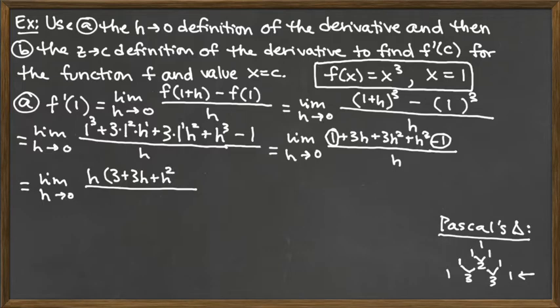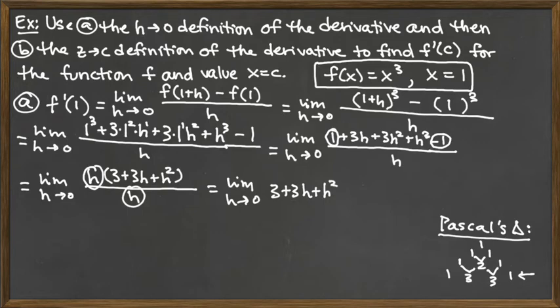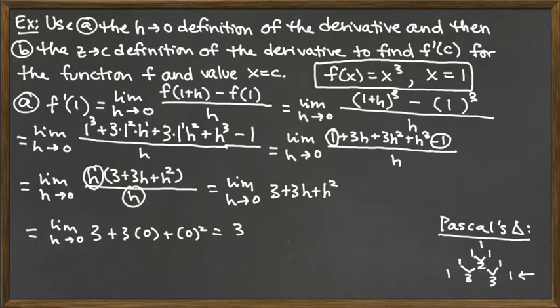The bottom still has that factor of h, but now we see the h on top and the h on bottom reduce out, leaving us with the limit as h goes to 0 of the polynomial 3 plus 3h plus h squared. Now we can take this limit by plugging in. We no longer get an indeterminate form because we canceled the factor giving us 0 on the bottom. So that leaves us with 3 plus 3 times 0 plus 0 squared, which equals 3.